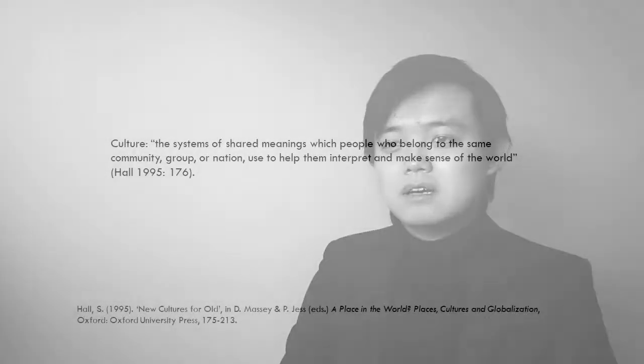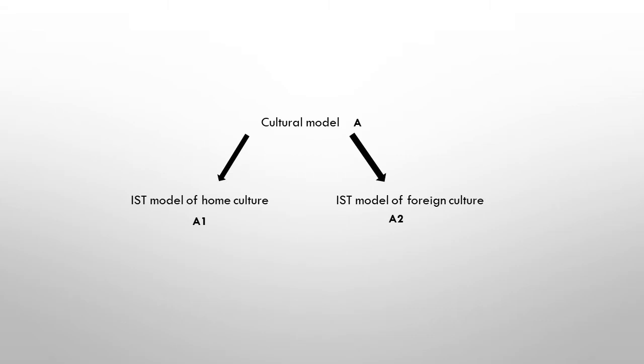IST models can be more efficiently discussed if regarded as a system. The proposed system consists of two levels: culture and media. The first level, the cultural model, refers to the audiovisual patterns that are cultivated within a cultural group and presents audiovisual constructions possible to represent that culture. Culture in this context can be regarded as the systems of shared meanings which people who belong to the same community, group or nation use to help them interpret and make sense of the world. A model of home culture refers to patterns adopted by translators from their own cultivated culture, and foreign culture refers to those from another culture.